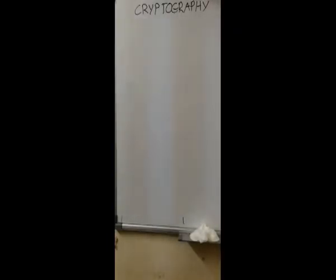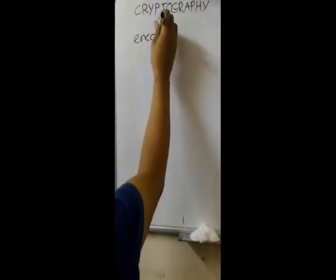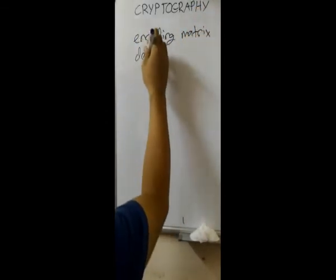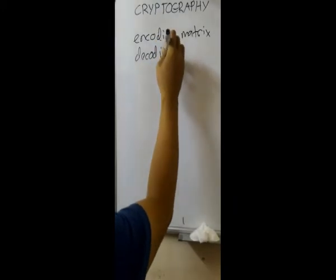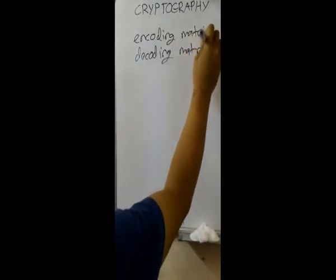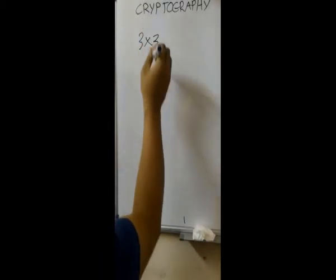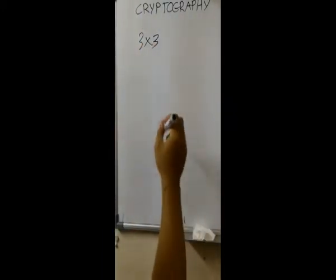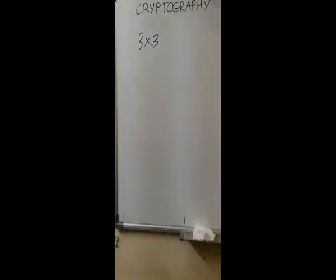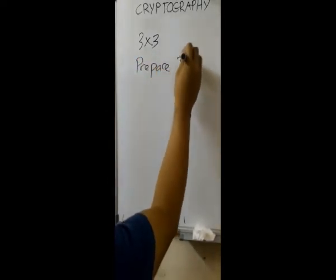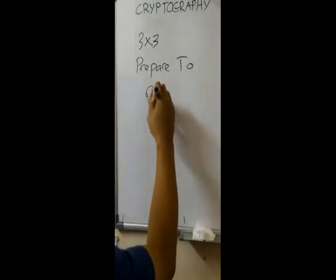I'm going to show you how to apply matrices in cryptography. First, we must use an encoding matrix as well as a decoding matrix. The encoding matrix is a random 3x3 matrix. We can either use 2x2 or even larger, to be applied to the message that we want to send to the user. Let the message be: prepare to negotiate.